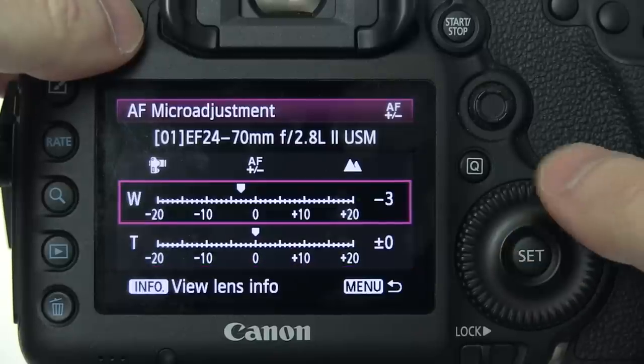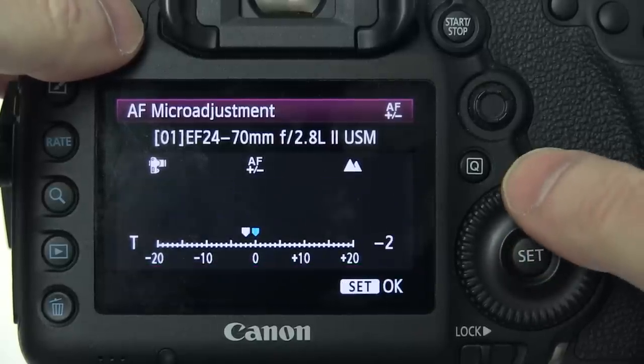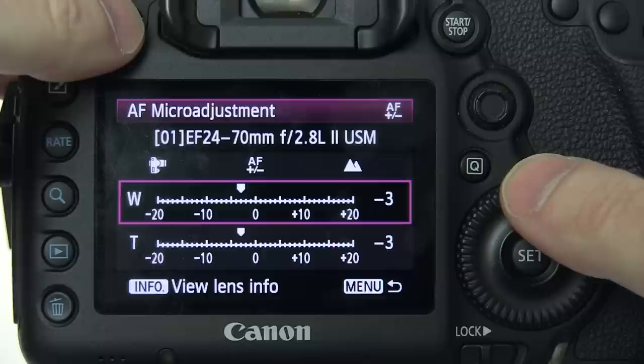Then you would go to 70 millimeter, the telephoto end, take another shot, and adjust that. So there's a feature on the back of your camera that allows you to do that.